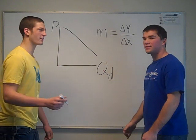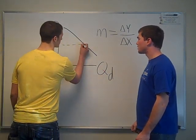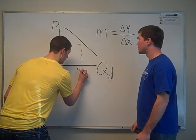Boom! Law of demand. So say we start out with a specific price, P1. This results in a specific quantity demanded, or QD1.